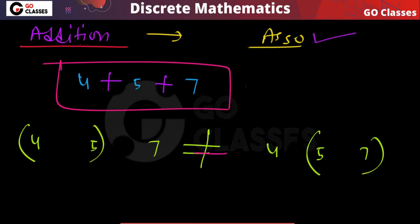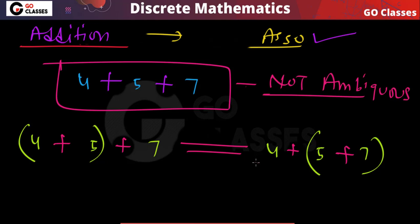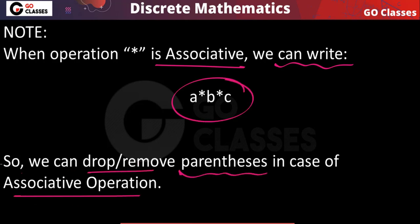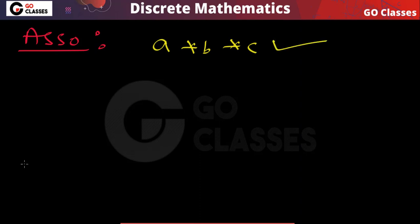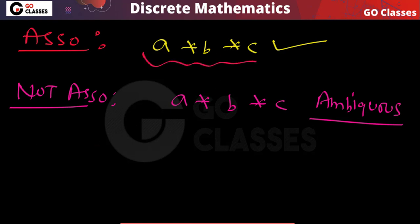If you have addition, it is not ambiguous because addition is associative. Whether you do the first addition first or the second addition first, both are basically the same. So if your operation is associative, you can write without parentheses — you can remove the parentheses. Only for associative operations can you write like this without parentheses. If the operation is not associative, the statement is ambiguous, and you should not write it without parentheses, because the two differently parenthesized expressions give different values.